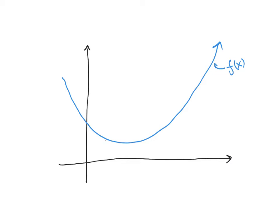We usually label the left side of that interval a and the right side b. A and b are on the x-axis. So for f of x on the closed interval [a, b], if a is an x value, then the y value associated with that x number is f of a. And the y value associated with b is f of b.